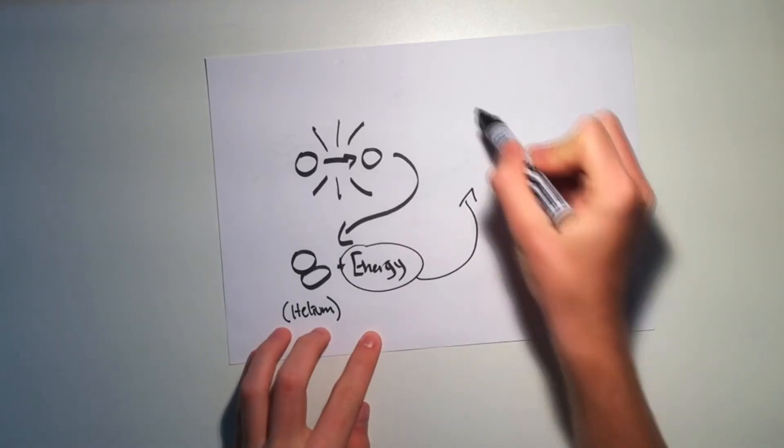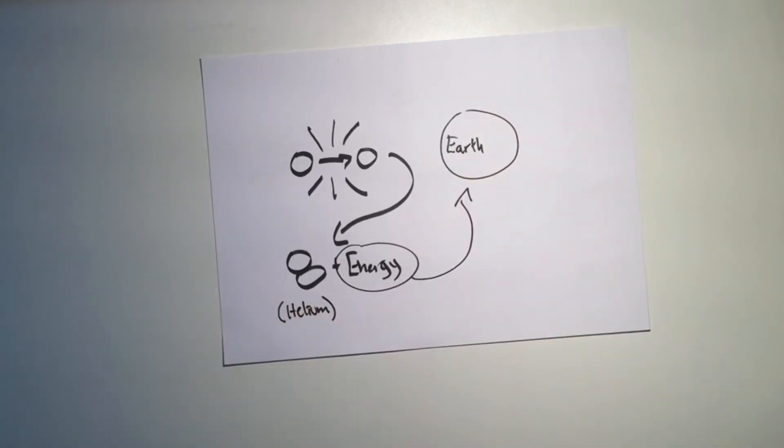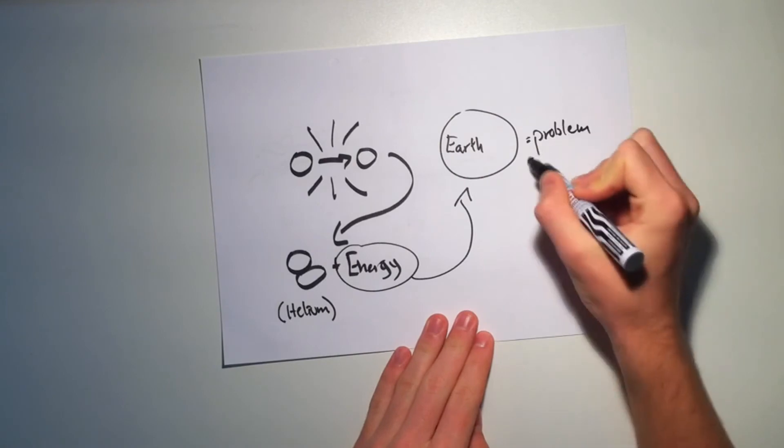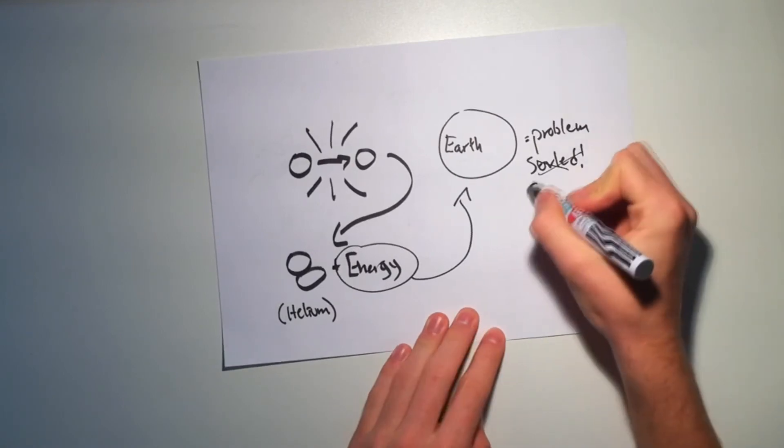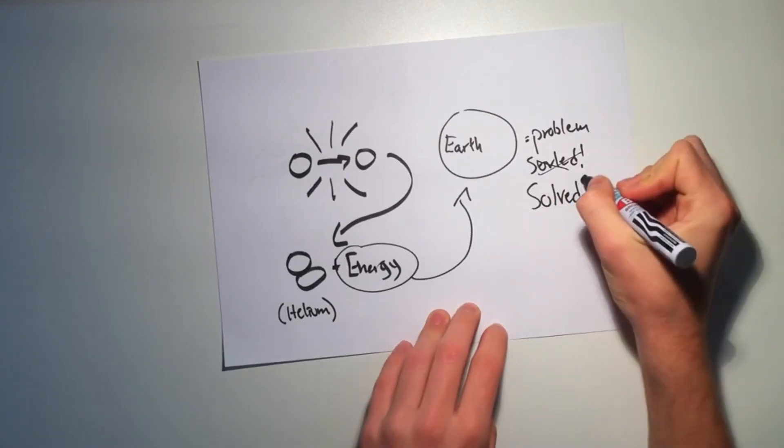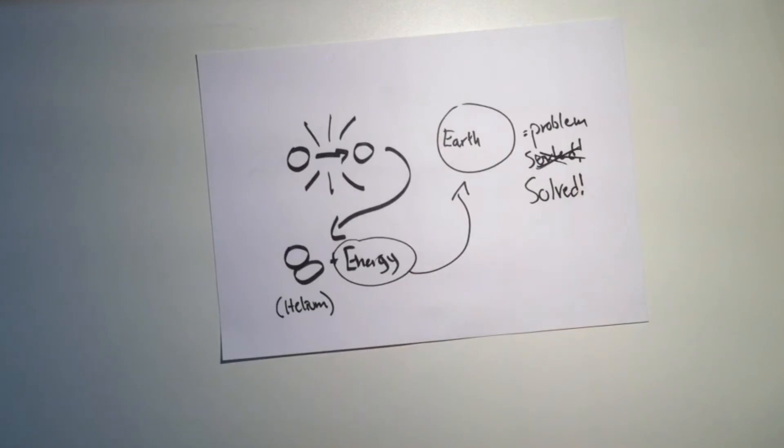If we could somehow take this energy and use fusion on Earth, all of the energy problems would be solved. But we're not there yet, even though there are hundreds of scientists working to solve this problem using giant magnetic fields to hold the extreme heat.